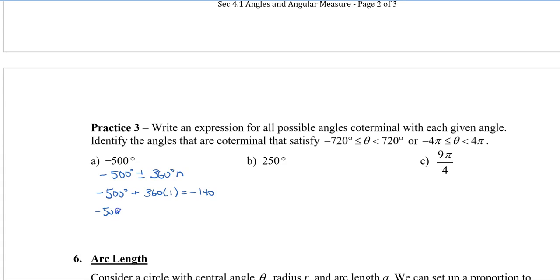If I go negative 500 and I add 360 degrees times 2, I now get 220 degrees. If I add negative 500 plus 360 degrees times 3, I'm going to get 580 degrees.